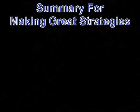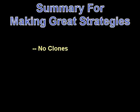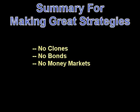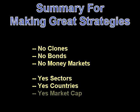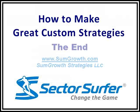In summary, here's how to make great strategies. No clones — more of the same changes nothing. No bonds. No money markets. Their character is different from market sectors and countries. Sector Surfer's Storm Guard feature already separately incorporates the security expected from these asset classes. Market sectors have the best divergent character — no wonder we call it Sector Surfer. World regions and countries also have respectable divergent character similar to that of market sectors. Market capitalization, although much less prolific, still has useful divergences if sectors and countries are not available to you. Good luck, and thanks for Sector Surfing with us!